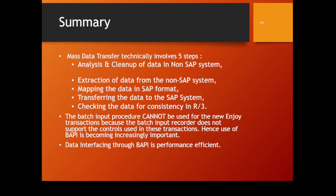As a summary, mass data transfer technically involves five steps: analysis and cleanup of data in the non-SAP system; extraction of data from the non-SAP system; mapping the data in SAP format; transferring the data to the SAP system; and checking the data for consistency in R3 or SAP ERP. The batch input procedure cannot be used for new transactions since the batch input recorder does not support the controls used. Hence, use of BAPI is becoming increasingly important, and data interfacing through BAPI is performance-efficient with a huge impact on performance.